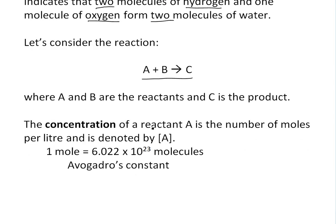Basically, the concentration of A is the number of moles per liter and is denoted by A enclosed with brackets. This mole is equal to 6.022 times 10^23 molecules, and it's a really useful constant. I'm not going to go over the definition right now, but I might do that in a later video. This is called Avogadro's constant.